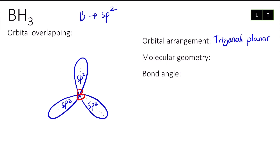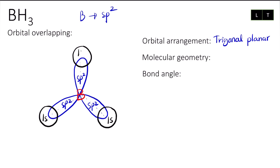Next, we have three sigma bonds where the sp2 hybrid orbitals of boron will overlap with the 1s orbital of hydrogen end to end — meaning tip to tip. I will have one spherical shape here — since there are three hydrogens, that means three spherical shapes. Don't forget to label '1s' for each of them for hydrogen.